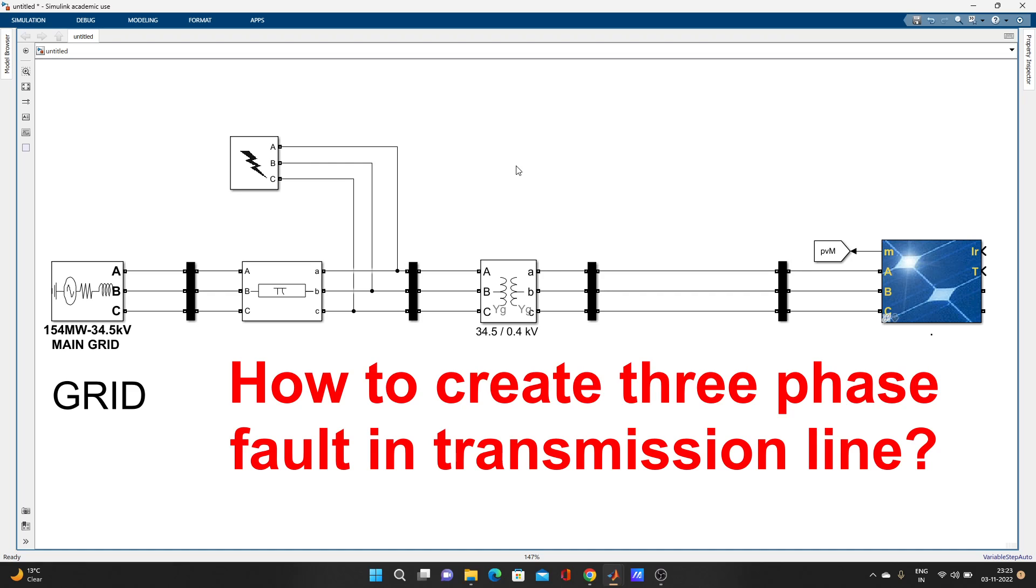So three-phase fault you need to create in a three-phase line. Here you can see a sample model where grid is connected with one solar panel and transformer. What you have to do is just double click here and search three-phase fault.